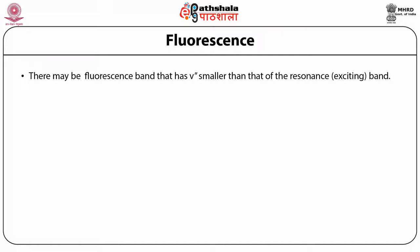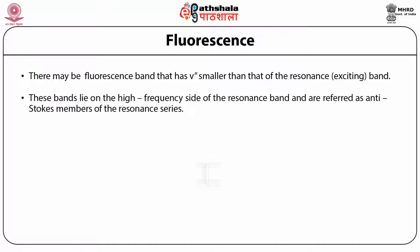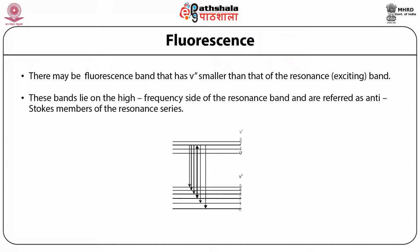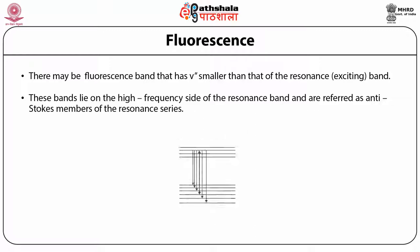The whole series of bands is called the resonance series, and the band coinciding with the exciting absorption band is called the resonance band. Such a series of bands is observed in iodine-like molecules. There may be fluorescence bands that have nu'' smaller than that of the resonance — these bands lie on the higher frequency side of the resonance band and are referred to as anti-Stokes members of the resonance series.